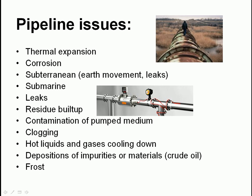Pipeline issues: we've got thermal expansion - that's a big problem. You can see a picture here of a straight pipeline - I think it's the Alaska pipeline - with somebody walking along it. If it were straight all the way through, we'd have a massive problem because the pipeline would just grow and shrink by meters, even during normal temperature variations throughout a day.